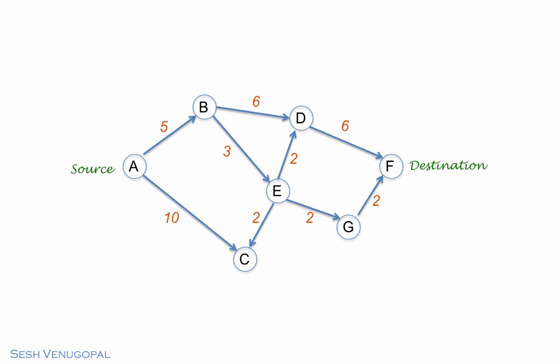Here is a directed graph with edge weights. We want to find the shortest path from point A to point F. In other words, A is the source and F the destination.